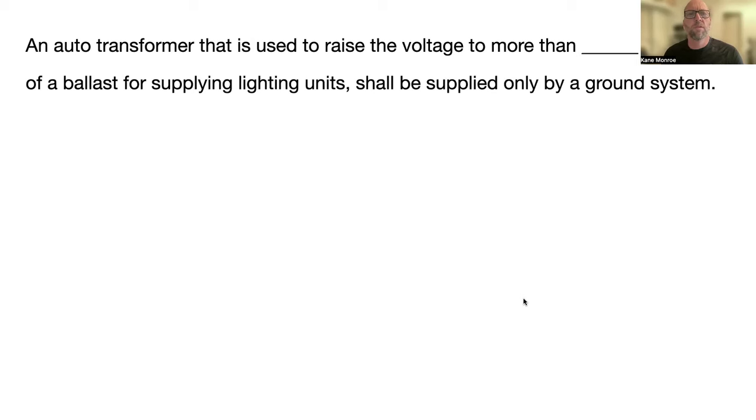An auto transformer is used to raise the voltage to more than blank volts as part of a ballast for supplying light units and shall be supplied only by a grounded system. And that is 300 volts, NEC 410-138.